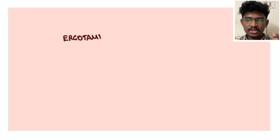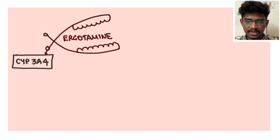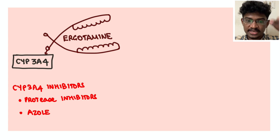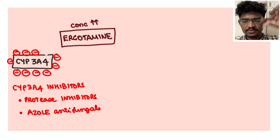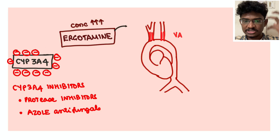What's happening here? See, ergotamine is a drug which is metabolized by cytochrome P3A4. So whenever you give any cytochrome P3A4 inhibitors like protease inhibitors or azole antifungals, what will happen? This ergotamine won't be metabolized, its concentration increases, and it's a strong vasoconstrictor. So it causes vasospasm of the cerebral blood flow vessels, cerebral vessels, causing reduced blood stability to the brain.